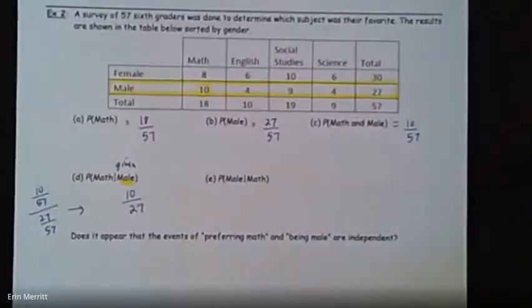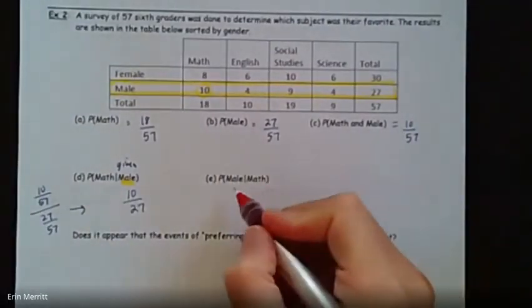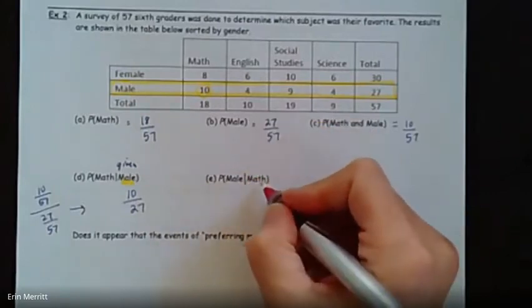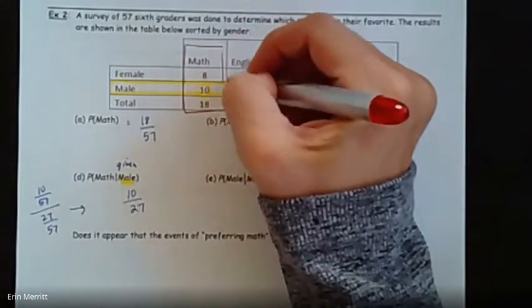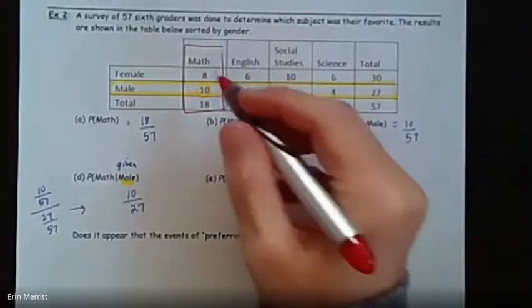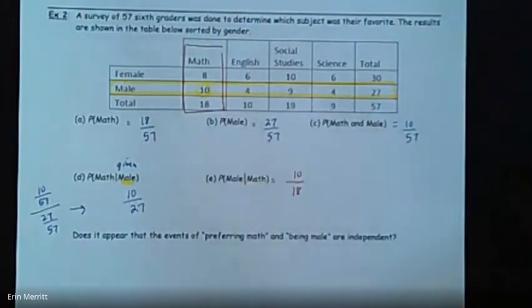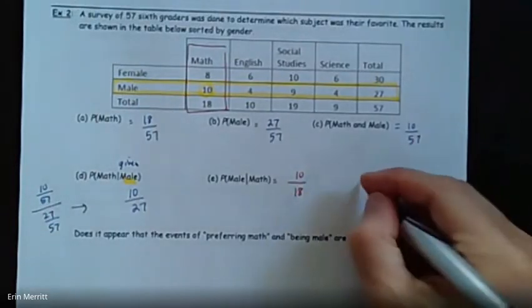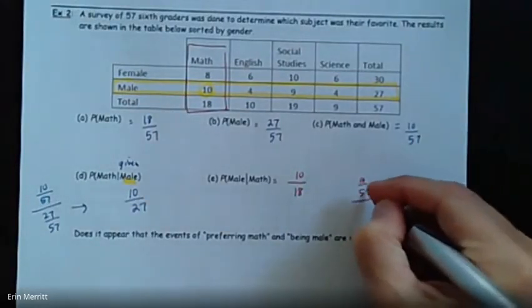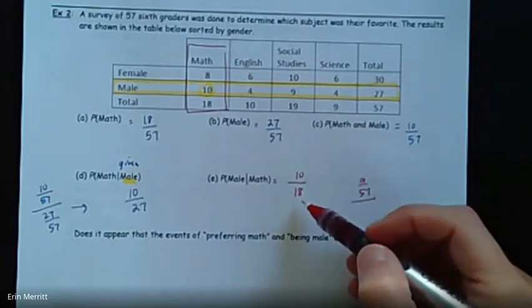Now let's do it in reverse: what's the probability that they're male given that they like math? Let's look at all the math people — there are 18 total math people. How many of them are male? 10. So 10 out of 18. That would have been the same as doing 10/57 divided by 18/57 — and there's that same answer.